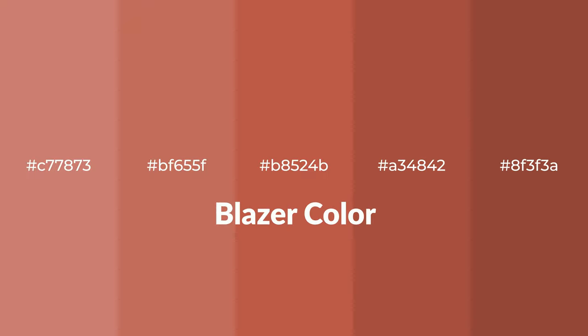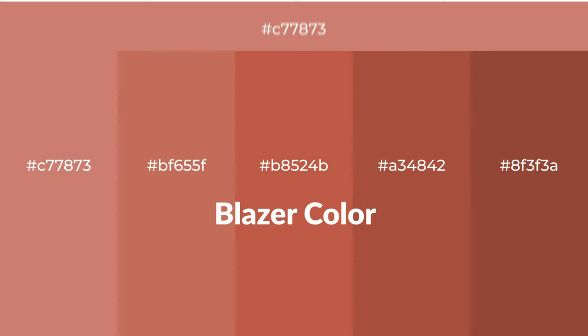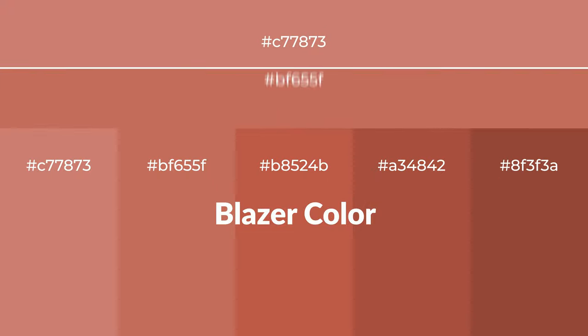Warm shades of blazer color with brown hue for your next project. To generate tints of a color, we add white to the color. Tints create light and exquisite emotions. To generate shades of a color, we add black to the color.